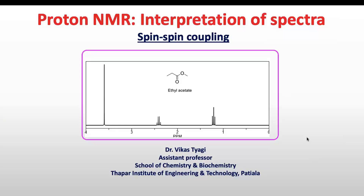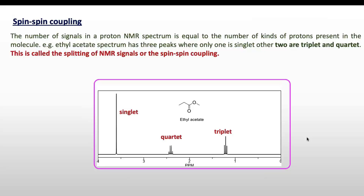In this video session I will be discussing spin-spin coupling or splitting of the signal. The number of signals in a proton NMR spectrum is equal to the number of kinds of protons present in the molecule. For example, in the spectrum of ethyl acetate it has three peaks where only one is a singlet and the other two are multiplets — one is a quartet and the other is a triplet. This is called the splitting of the NMR signal or spin-spin coupling.